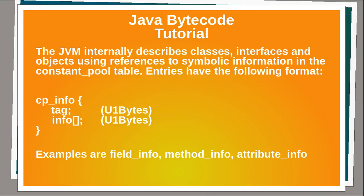The JVM internally describes classes, interfaces, and objects using references to symbolic information in the constant pool table. Entries have the following format — both fields are unsigned, one byte long. The tag tells you which objects or methods you are dealing with, and the info is an array of characteristics or attributes. Examples are the field info, the method info, the attribute info, and so on.